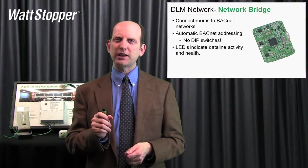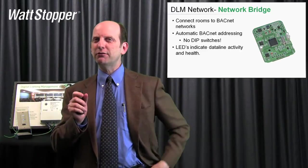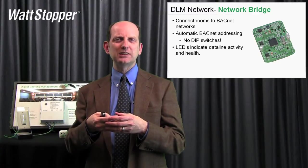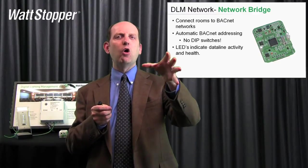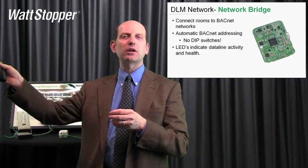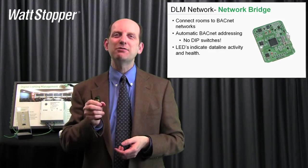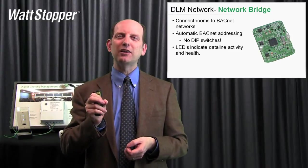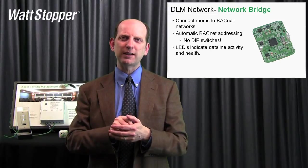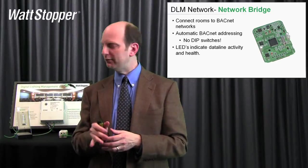The key to that networking system is what we refer to as the network bridge. The network bridge is actually a fascinating device — a communication device that basically takes the BACnet messages in and sends them into our little in-room bus, or takes what's happening inside the room and sends it out on the network. It's a two-way communication. One of the keys to the network bridge is that you don't see any dip switches, no little round trim pots or anything that you have to adjust. That's one of the cool things about the way we've implemented the information.